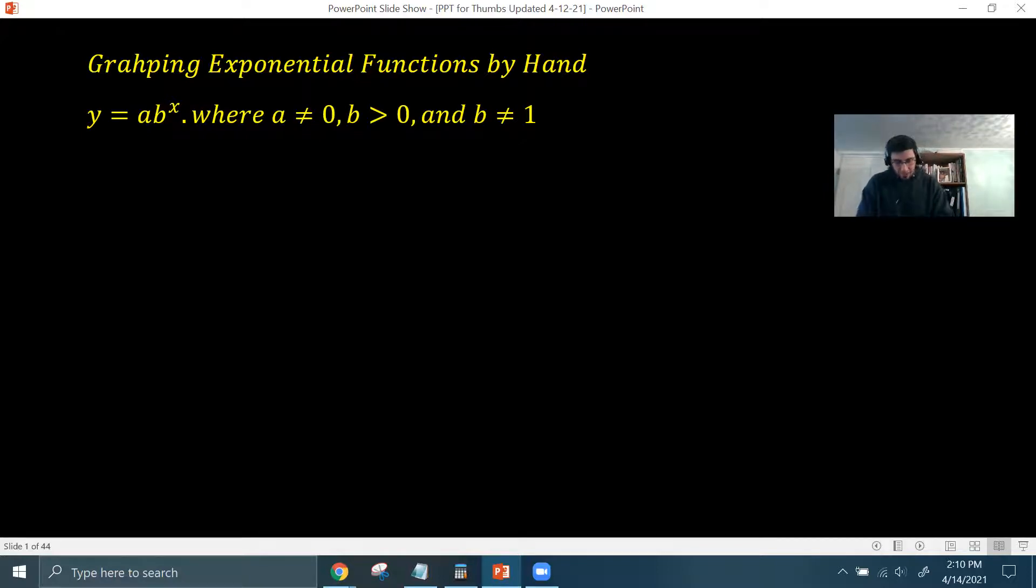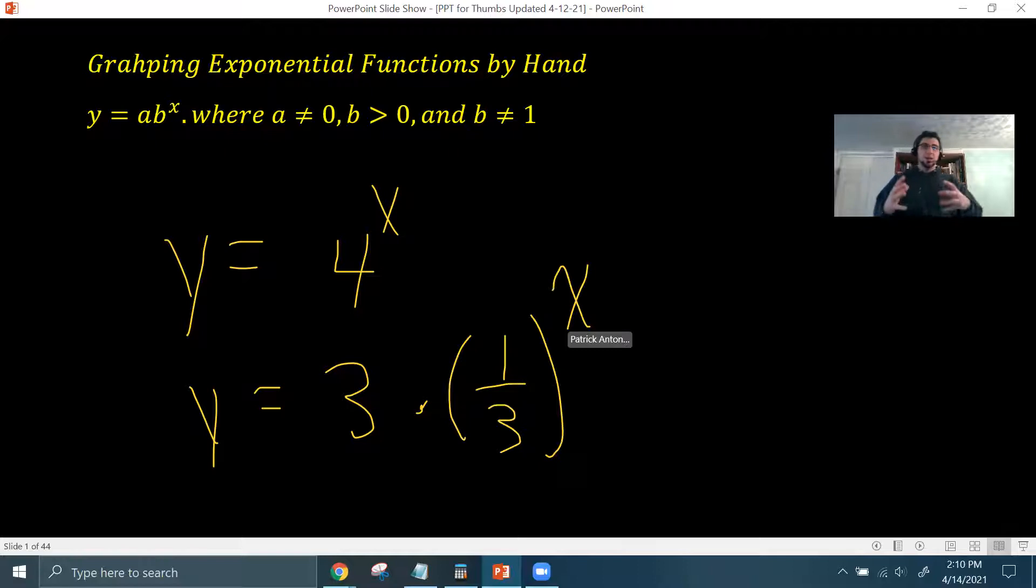Okay, so some examples would be like y equals 4 to the x. We're going to look at that in a little bit. Or y equals 3 times 1 third to the x. And the thing here is you cannot multiply the 3 and the 1 third together to just get 1 to the x power. I see students do this kind of thing all the time, but remember, we have to keep in mind order of operations, which says you have to apply the exponent before you multiply. So if you did multiply the 3 times the 1 third, then you'd be breaking some math rules there.